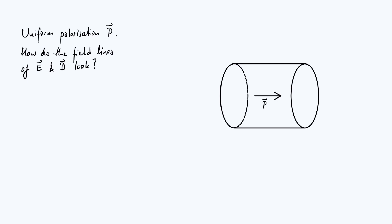Specifically, what we want to do is think about how the field lines of both the electric field E and the electric displacement field D produced by this electret look both inside and outside its volume. It turns out this is quite an interesting thing to do because it illustrates some important differences between these two fields.